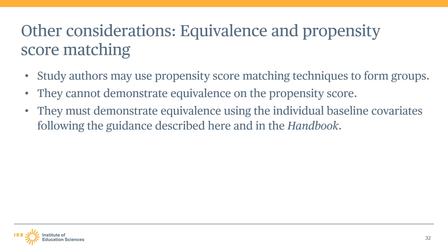The propensity score may be presented as a summary of the baseline characteristics of individuals. However, studies cannot use the propensity score to demonstrate baseline equivalence, even if the study used all the required baseline characteristics to estimate the propensity score. Rather, studies must demonstrate equivalence using the actual characteristics listed in the handbook, one at a time. Matching on propensity scores does not guarantee that groups would be equivalent on other individual measures — groups may look similar based on the propensity score but differences in pre-intervention test scores could still exist. So studies have to use the measures designated in the handbook to demonstrate equivalence.